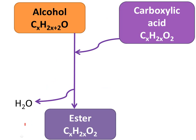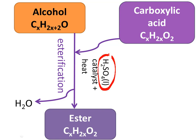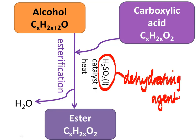We call this kind of process esterification. To cause it to happen, we need to add a sulfuric acid catalyst as well as heat. Sulfuric acid is a good dehydrating agent, meaning it's good at removing water. That's why it's useful in this reaction — we're trying to remove water from these substances to make them react with one another to form the ester.